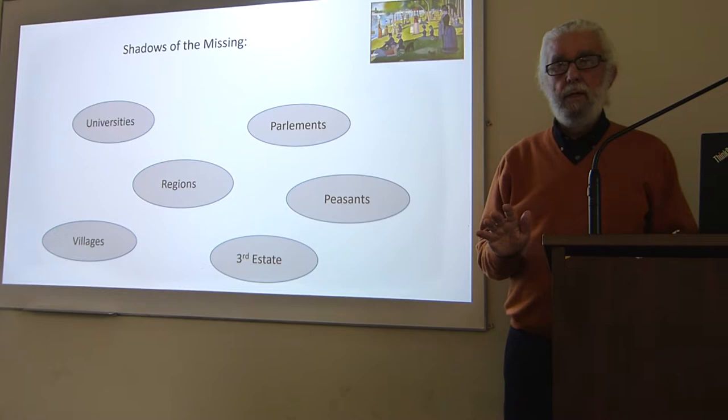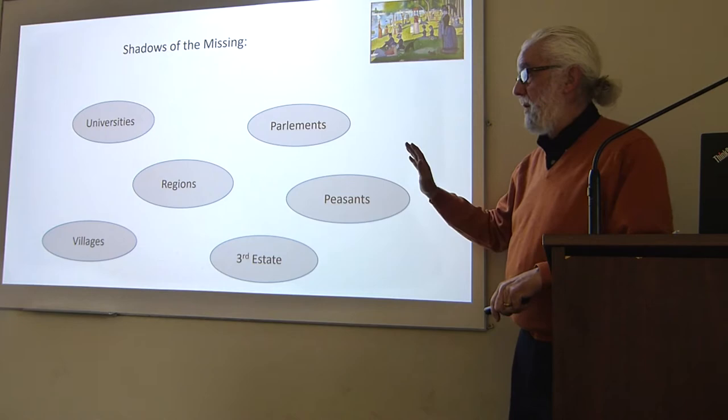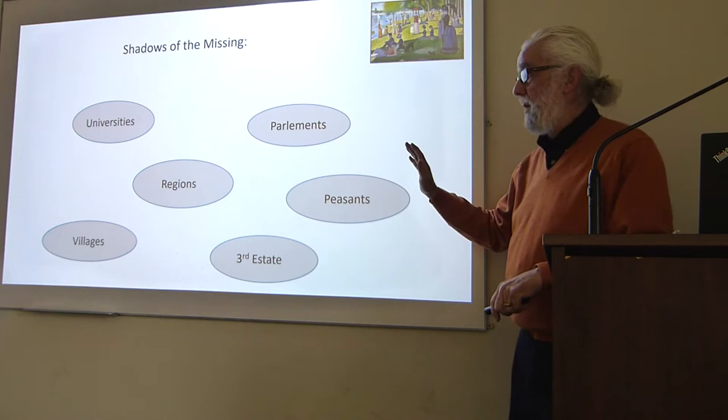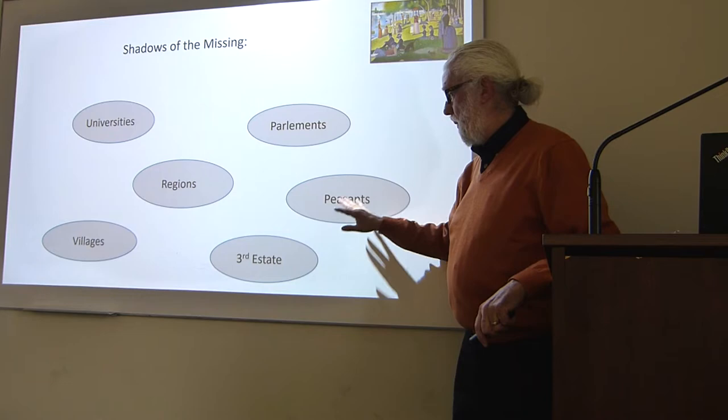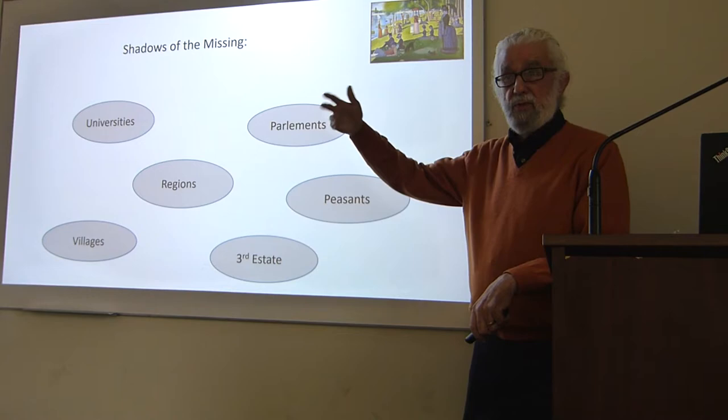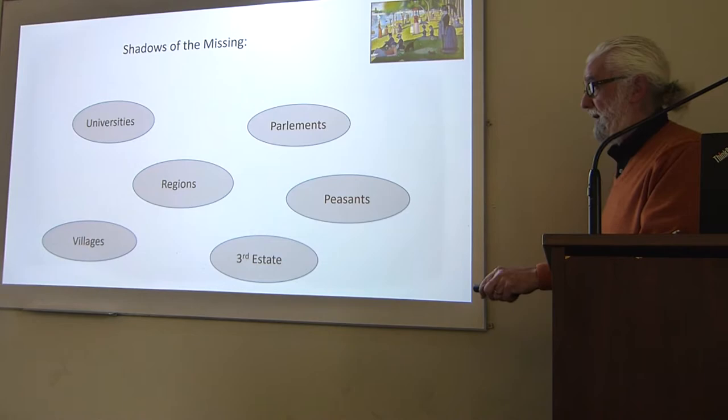There are areas where we don't see jetons. Pointillist history has some blank areas too: we don't see them in universities, we don't see them in parlements — which are kind of law courts — we don't see them in certain regions, not among the peasants or at the village level. Finding nothing is finding something — I think that's a contribution.